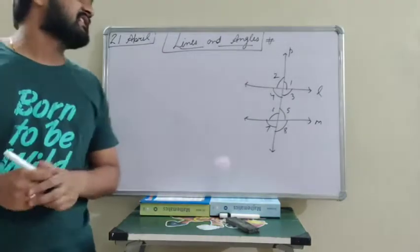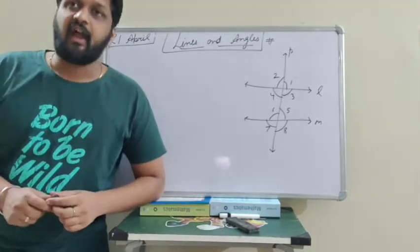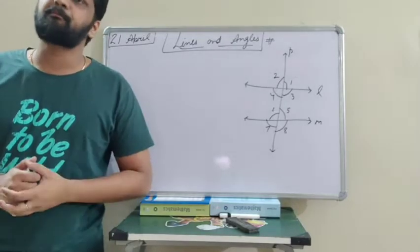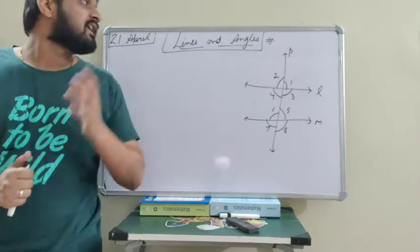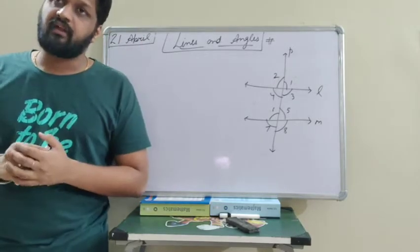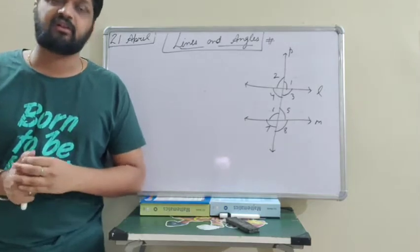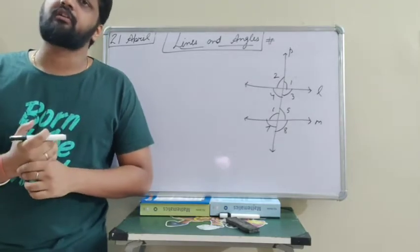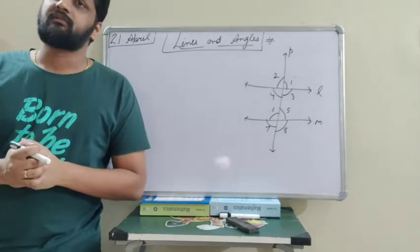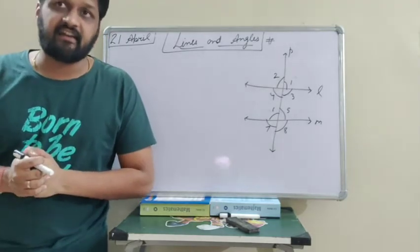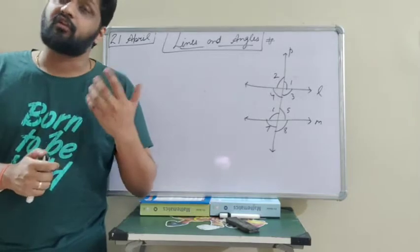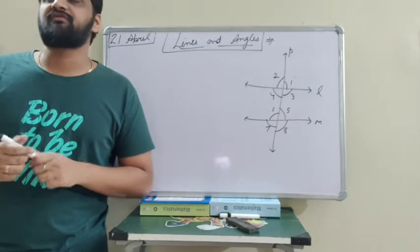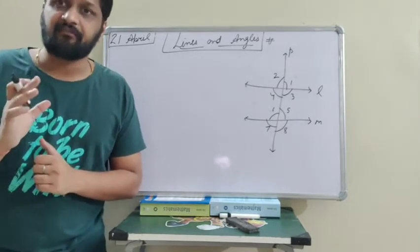Good morning students. As we know, our chapter Lines and Angles, that is Chapter 6 of NCERT, is going on. So far we have discussed the basic concepts related to lines and angles — what is a point, a line, a line segment, and a ray. We have also done how angles are formed, the different types of angles, linear pair, angles in a straight line, exterior angle, interior angle, alternate interior angles, alternate exterior angles, corresponding angles, and vertically opposite angles.